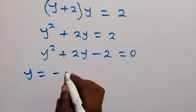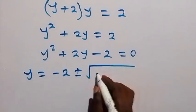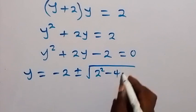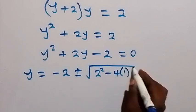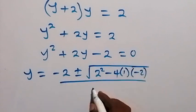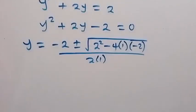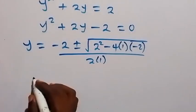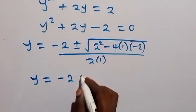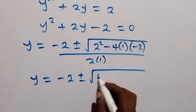We can solve this quadratic equation using the quadratic formula. We have y equals to minus 2 plus or minus the square root of 2 squared minus 4 times 1 times negative 2, all over 2. This simplifies to y equals to minus 2 plus or minus the square root of 4 plus 8, giving us the square root of 12.